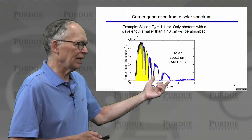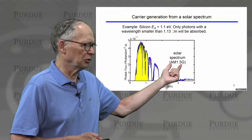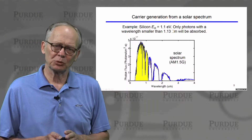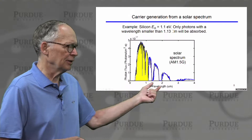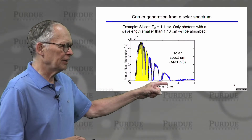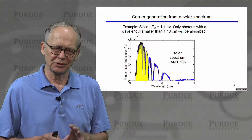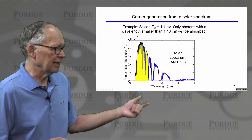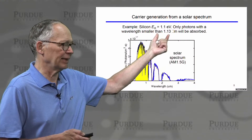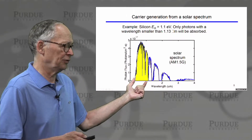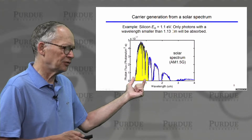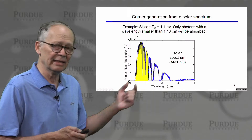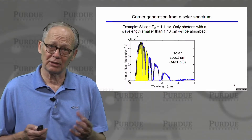Consider a solar spectrum — a spectrum common in the mid-latitudes of the United States. This plots the number of photons per square centimeter per second incident on an area as a function of wavelength. You can see the spectrum with strong notches, which refer to various atmospheric absorption processes that remove photons at specific energies. Photons with wavelengths less than 1.13 micrometers have enough energy to create electron-hole pairs in silicon — this fraction of the solar spectrum is responsible for the performance of a solar cell that converts sunlight into electricity.